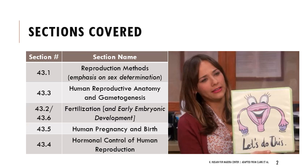I rearranged the sections of the chapter a little bit. We'll start with reproduction methods, focusing on what we mean by biological sex and sex determination. Then we'll get into human reproductive anatomy, distinguishing between individuals who produce eggs and those who produce sperm. Sections 43.2 and 43.6 are both about fertilization, so I combined those, and we'll also cover early embryonic development, human pregnancy and birth, and hormonal control of human reproduction.